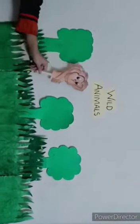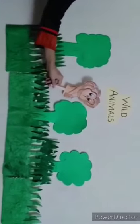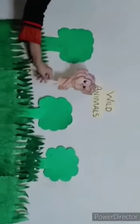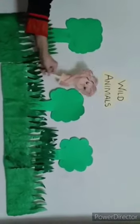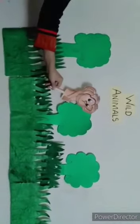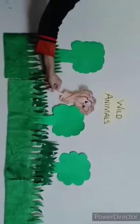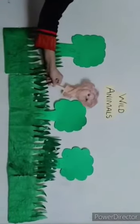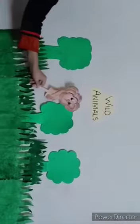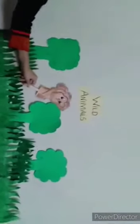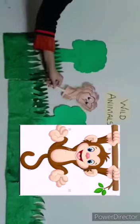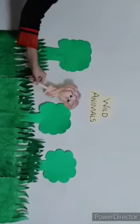Which animal is this, children? You are right — monkey! This is a monkey. Monkey wants to jump — jump, jump, jump. Monkey ko jump karna pasand hai. The sound of the monkey is called chatter. The baby monkey is called infant. Monkey ki baby ko infant kehte hain. Bye bye monkey.